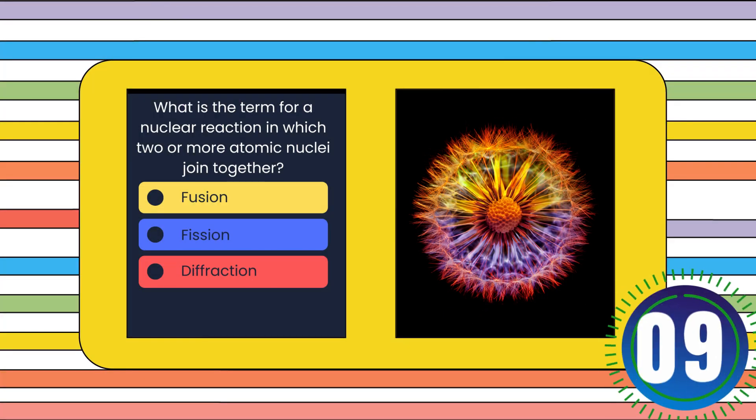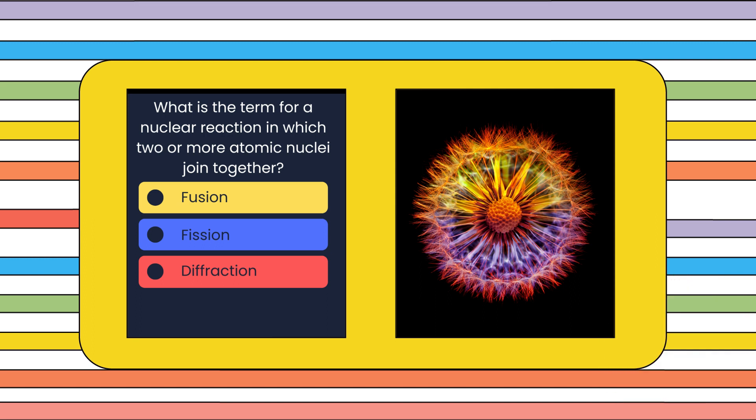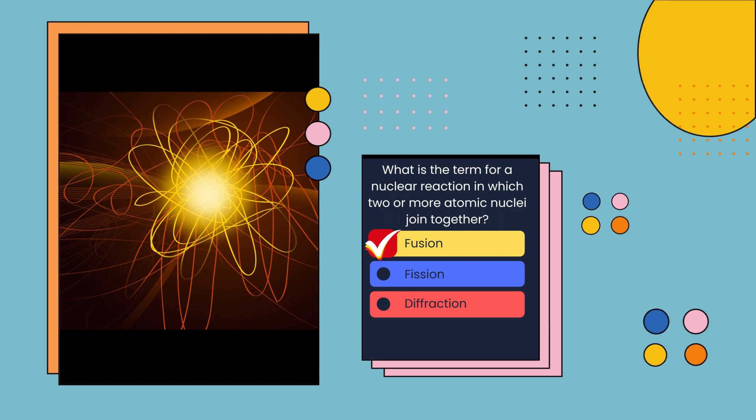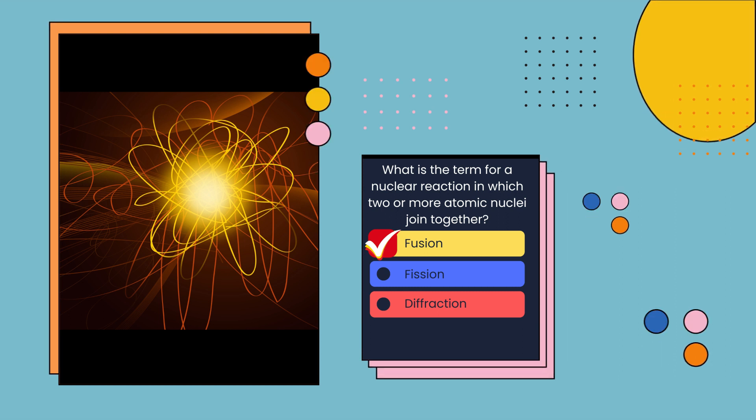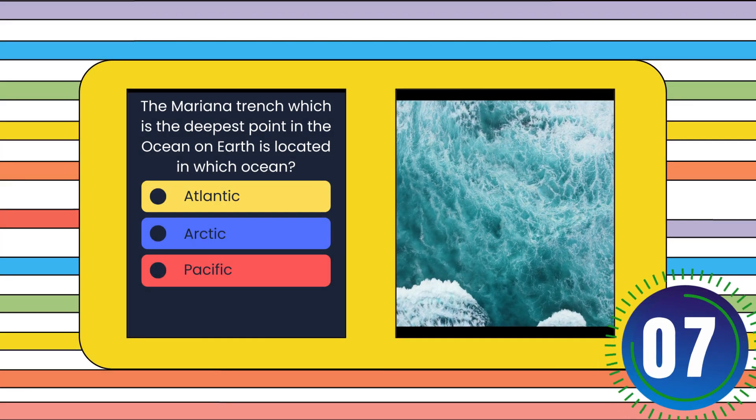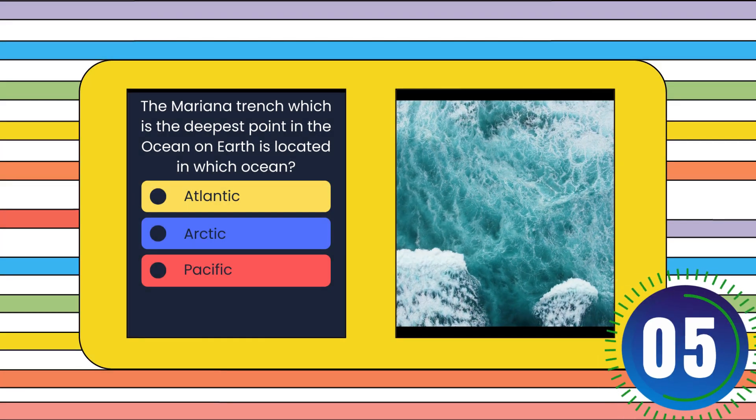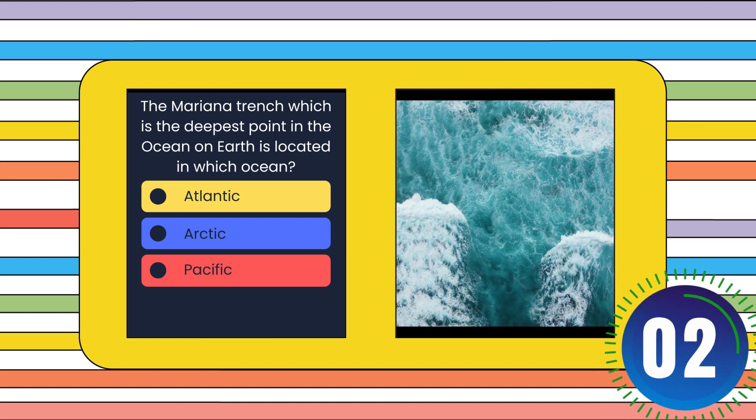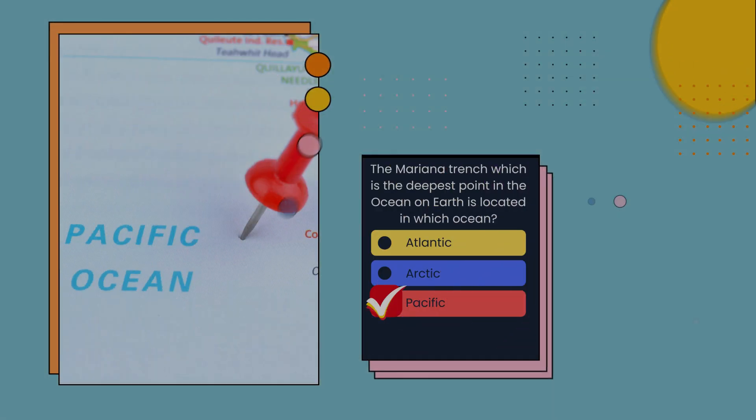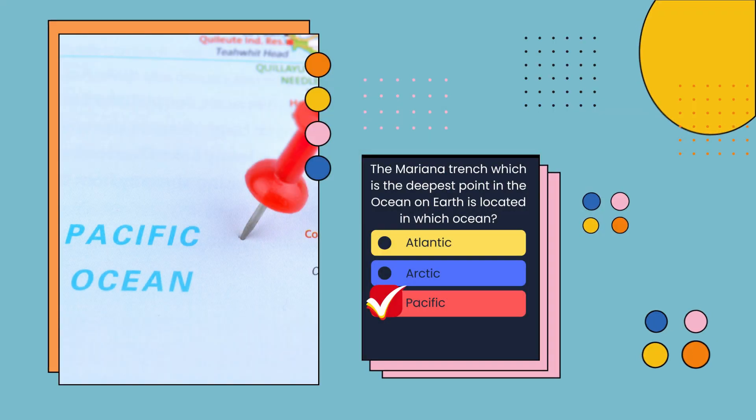What is the term for a nuclear reaction in which two or more atomic nuclei join together? Fusion, fission, or diffraction? Fusion. The Mariana Trench, which is the deepest point in the oceans on Earth, is located in which ocean? Atlantic Ocean, Arctic Ocean, or Pacific Ocean? Pacific Ocean.